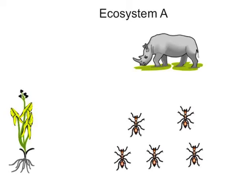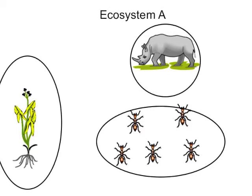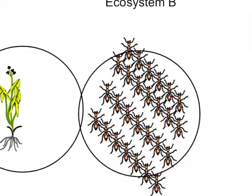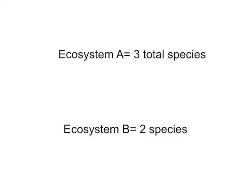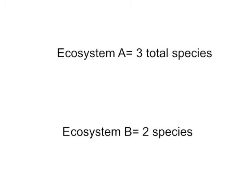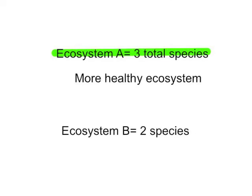In ecosystem A, there is one rhino, five ants, and one arrowroot plant. Looking at the number of species in ecosystem A, we see that there are three, so ecosystem A has a total of three species. In ecosystem B, we only have the arrowroot plant and millions of ants — that's two species. Comparing the two, ecosystem A has three species and ecosystem B has two, making ecosystem A more biodiverse because it has more species present.